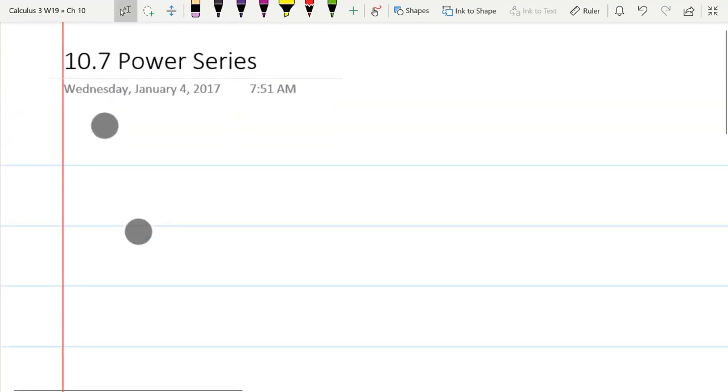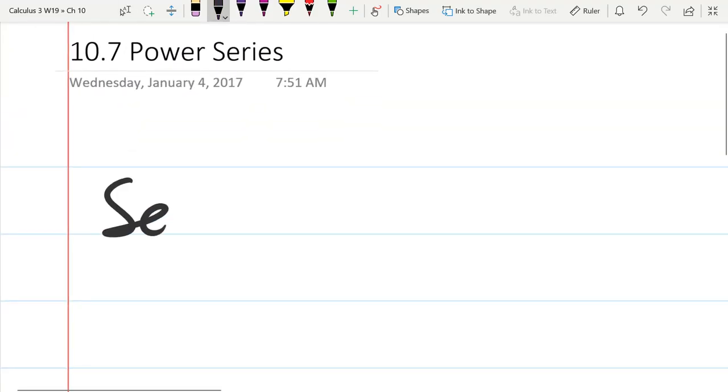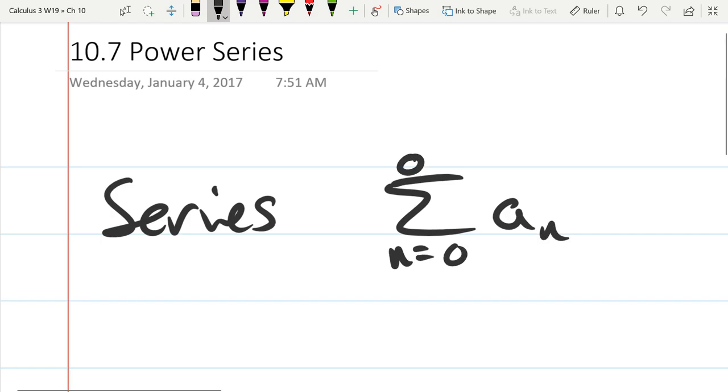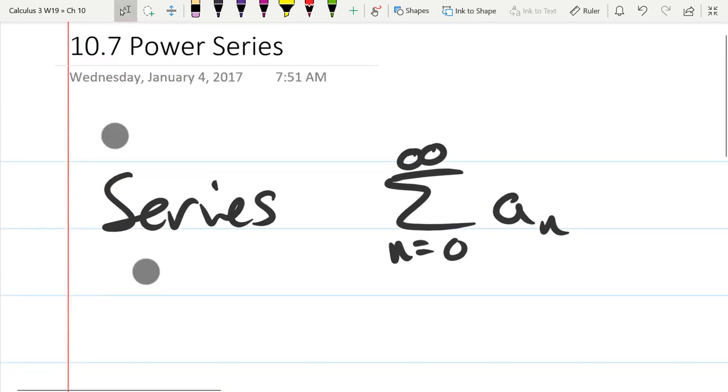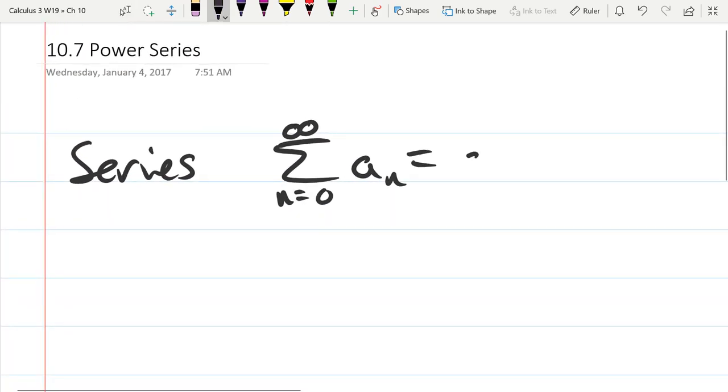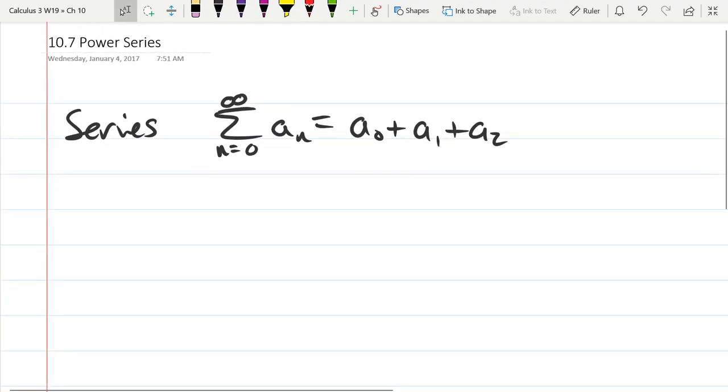So a power series, obviously a series. Series is a summation, we'll use n. We're only going to be looking at infinite series, so this is what series was before, and it was a₀ plus a₁ plus a₂ plus dot dot dot.